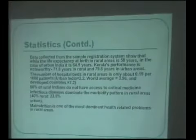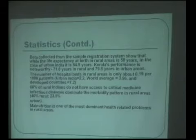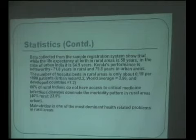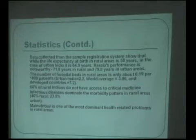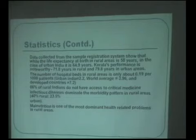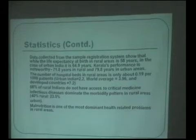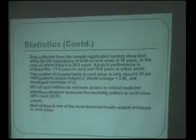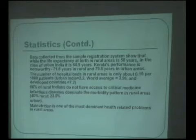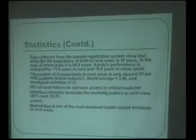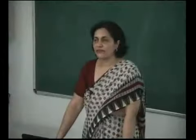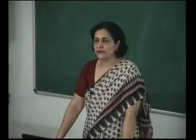Data from the Sample Registration System shows that life expectancy in rural areas is 58 years, while in urban areas it is 64.9 years. One exception is Kerala, whose performance is noteworthy — 71.8 years in rural and 79.8 years in urban areas, with the gap not very significant. The number of hospital beds in rural areas is only about 0.9 per 1,000 patients, compared to 2.2 in urban India, while the world average is 3.96 and developed countries average 7.2. 66% of rural Indians do not have access to critical medical care.